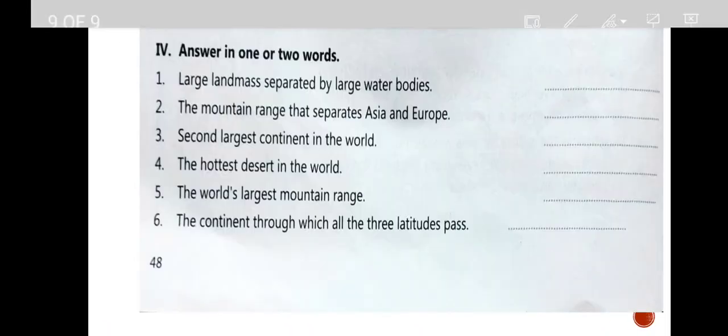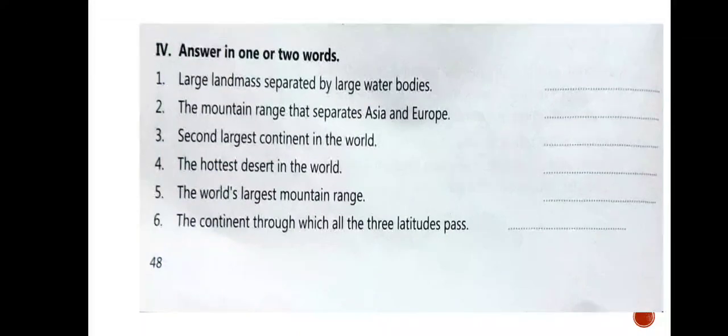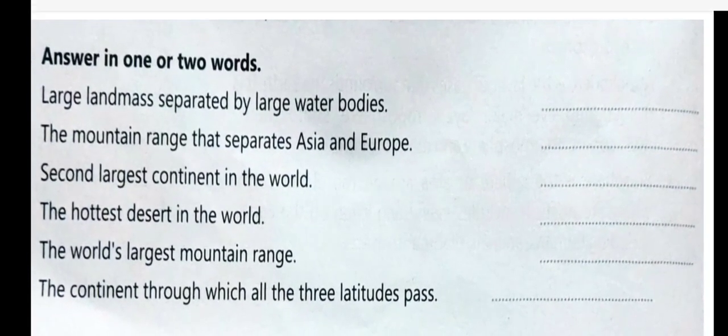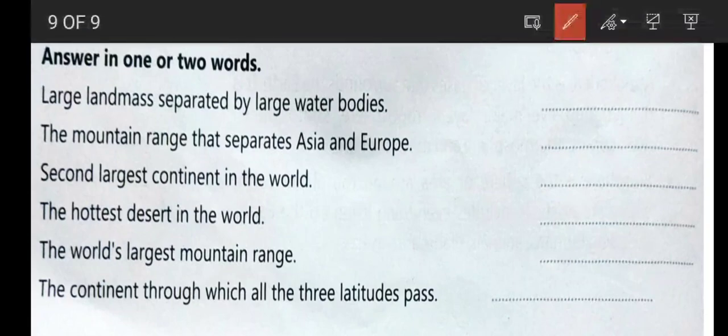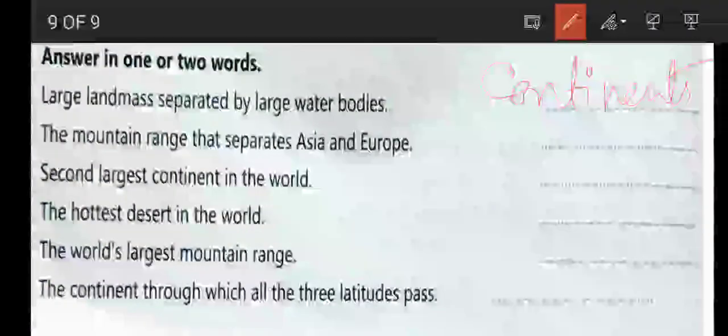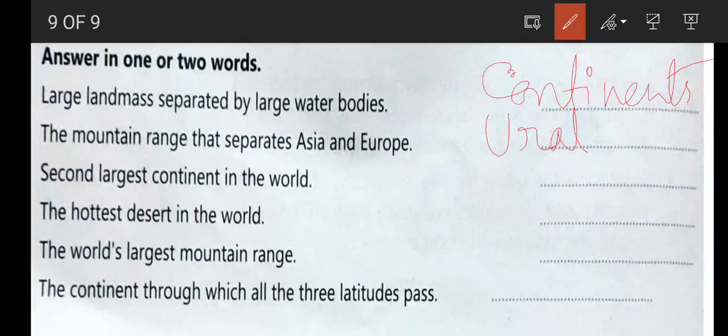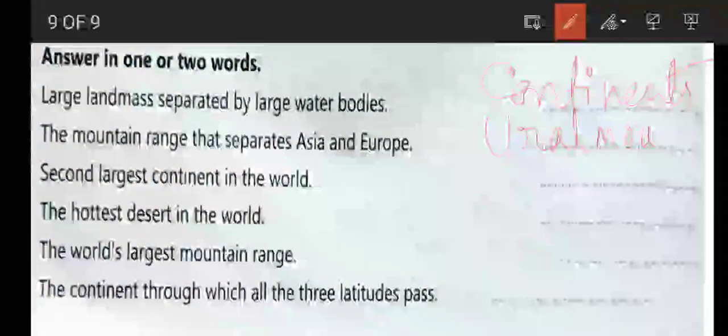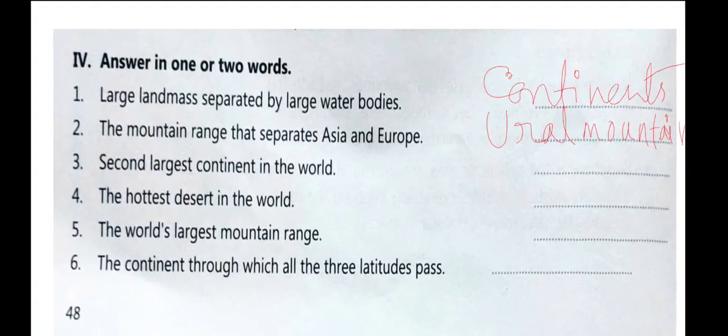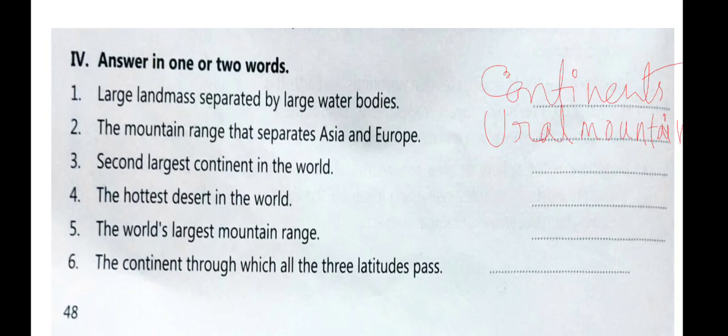All right, let's go. Next is answer in one word. Large land masses separated by large water bodies - this answer is continent. The large mountain range that separated Asia and Europe - Ural Mountain.